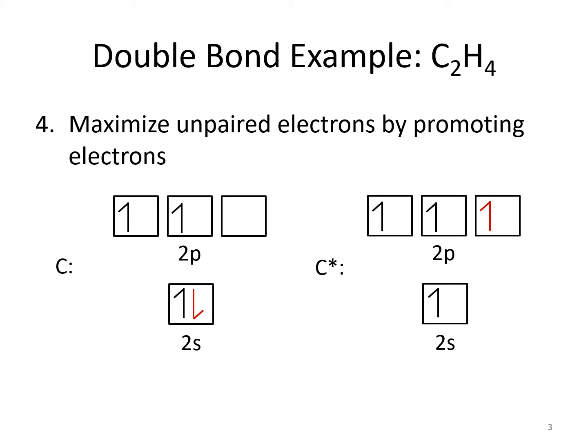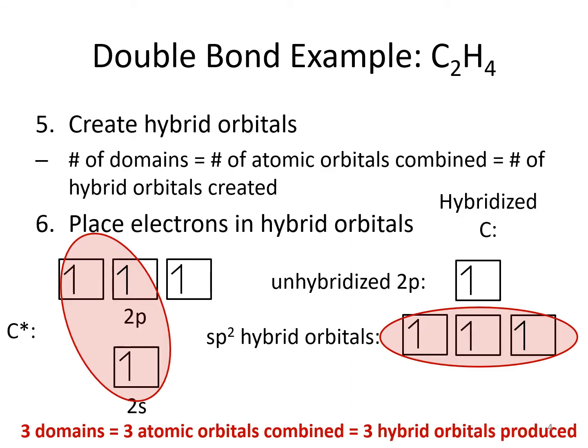We maximize the unpaired electrons by promoting the electron out of the 2s into the 2p. We use our magic number, which is our number of domains — we have three domains, so we take three atomic orbitals to make three hybrid orbitals. Notice we are not taking all of the orbitals that have electrons; we have to go based on our magic number. We take 1s and 2ps to make sp2 hybrid orbitals. We also have an unhybridized p orbital that has one electron in it, which we leave alone at the same energy as before.